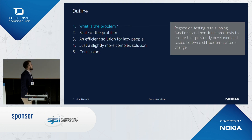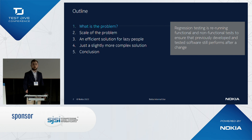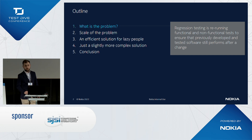Let's start with the outline of the whole presentation. I think most of you know what regression testing is — it's checking whether new code, so new functionality, didn't break anything that was working before. Today I'm going to tell you about the scale of the problem, especially at Nokia, a big multinational company that works with its own software.